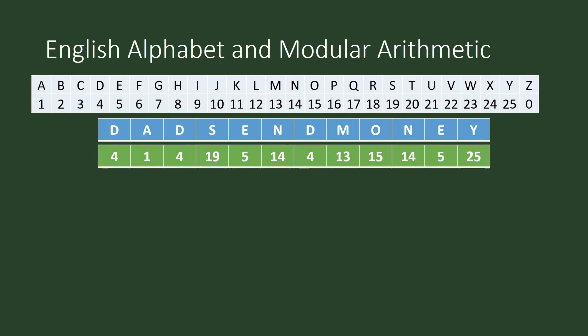By the way, the numeric equivalent of this message is this one: 4, 1, 4, 19, 5, so on and so forth. And this string of integers came from this table. You will now apply your encryption key.